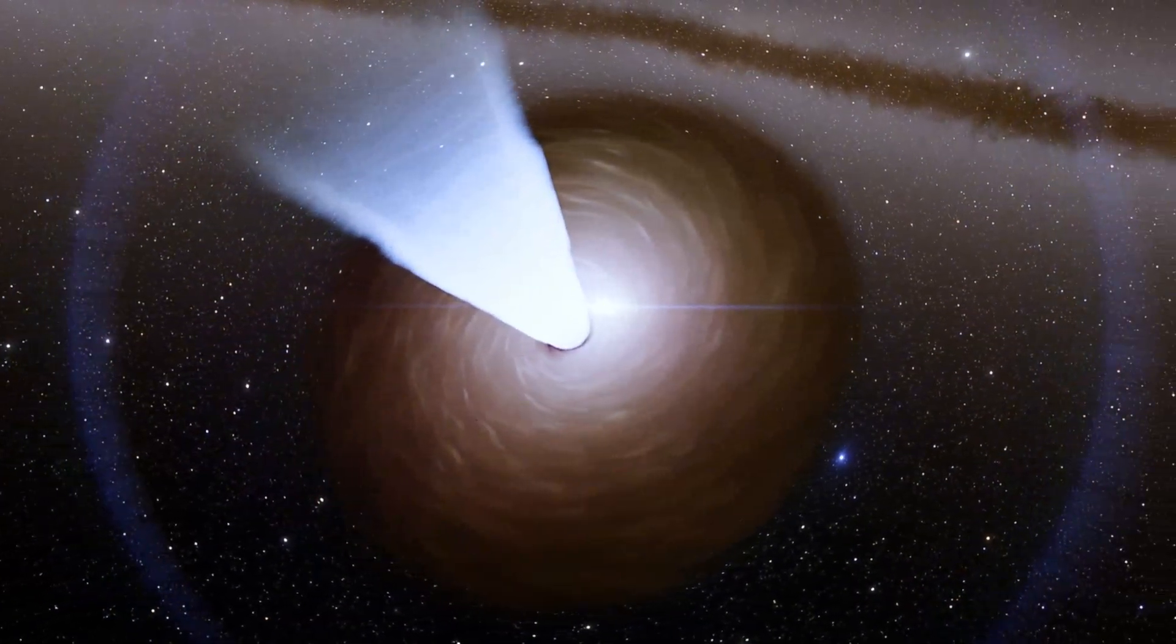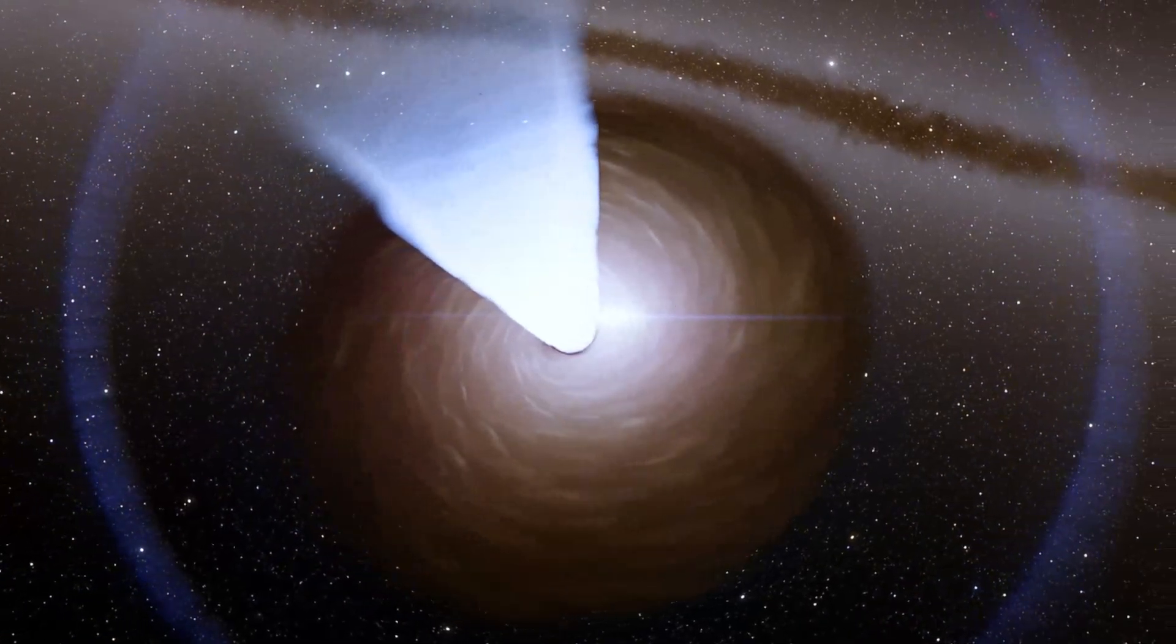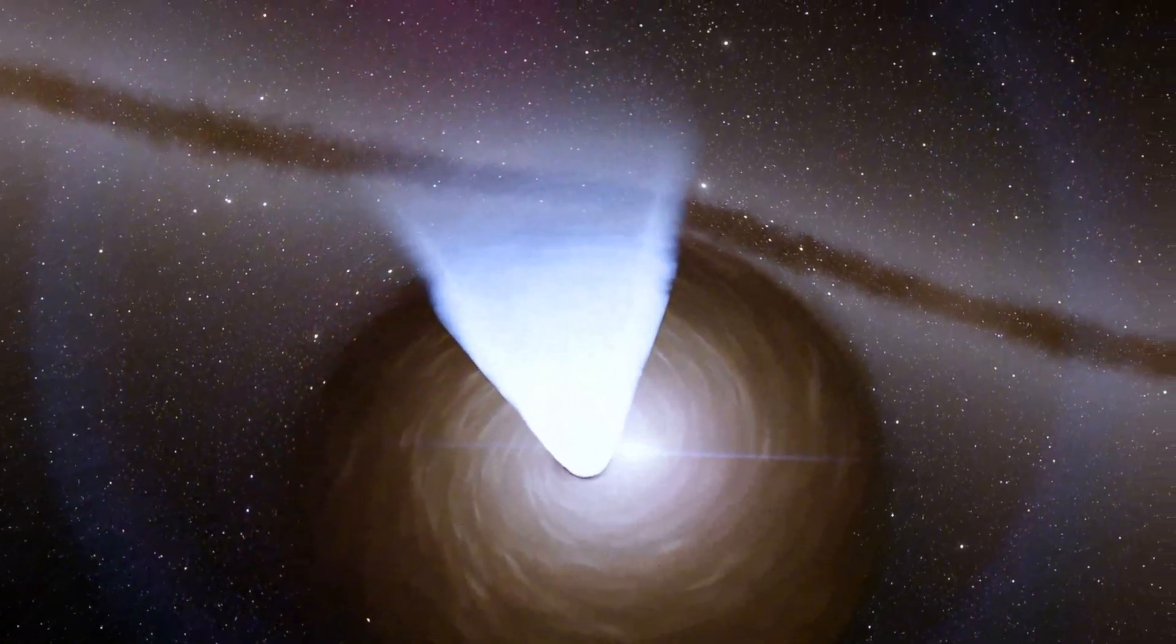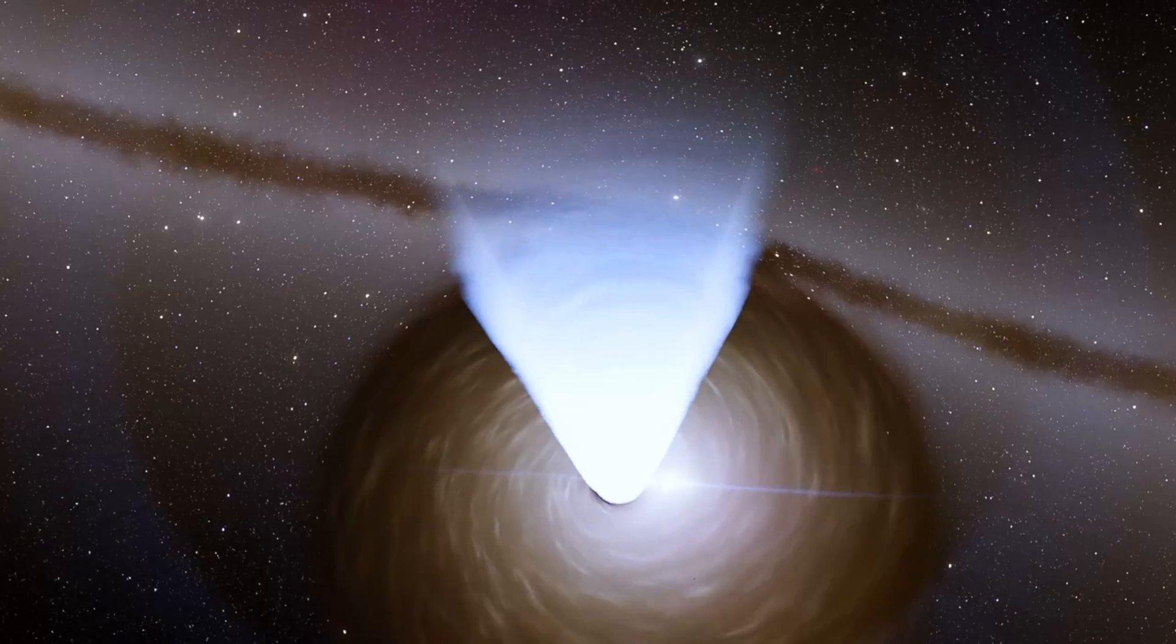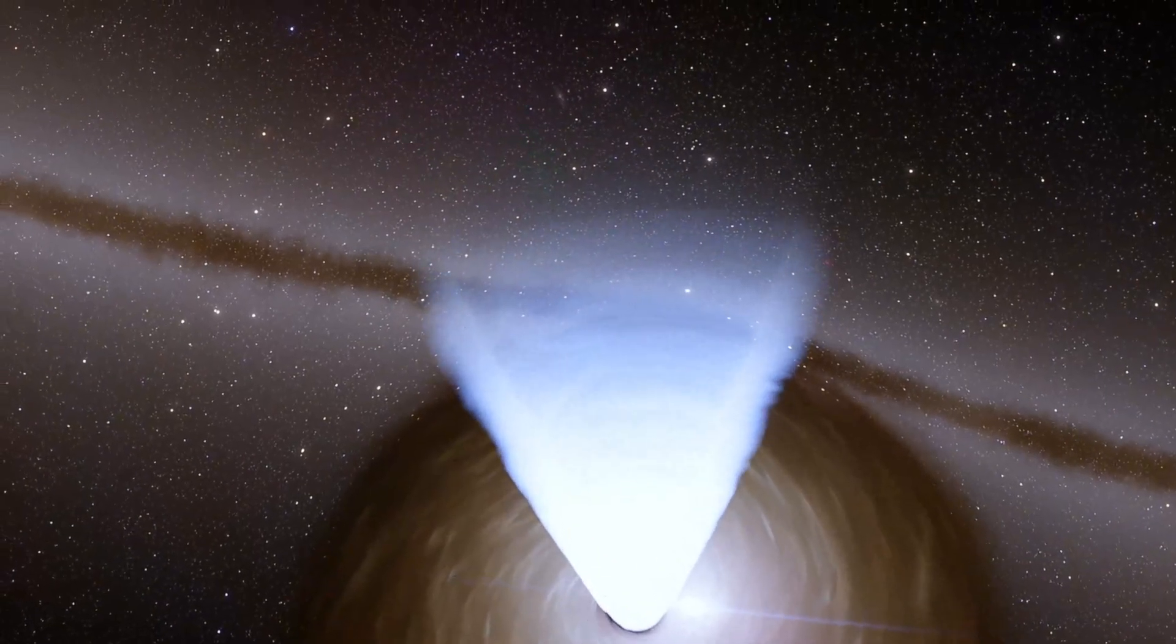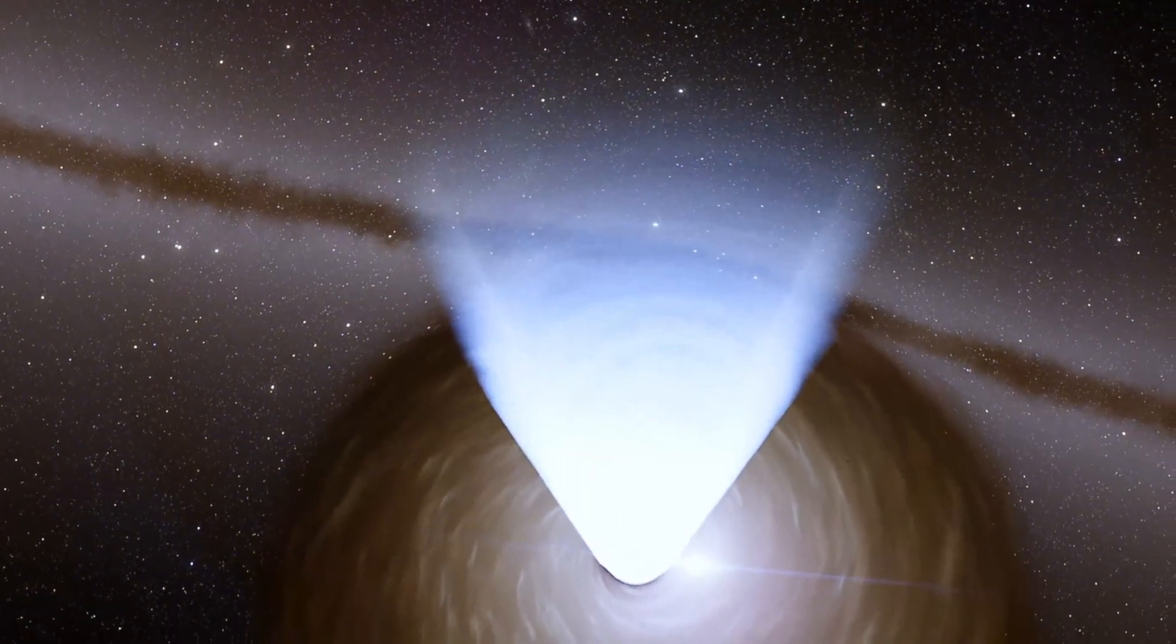This is the accretion disk: matter caught in a desperate spiral, heating to millions of degrees as it nears the event horizon. The glow you see isn't the black hole itself, but the fiery remnants of stars and gas it has consumed.